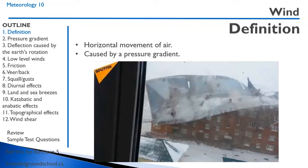The definition of wind is the horizontal movement of air. It is caused by a pressure gradient. A pressure gradient is when we have higher pressure in one area and lower pressure in the other — the air wants to move from the high pressure region to the low pressure region.